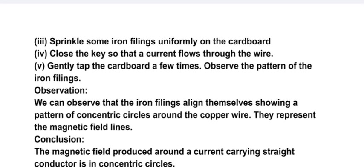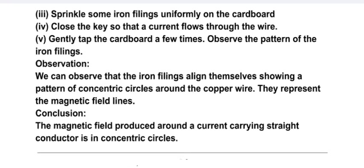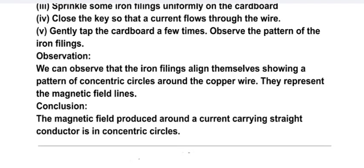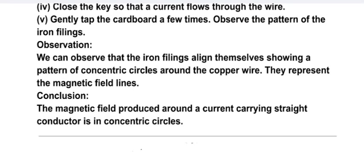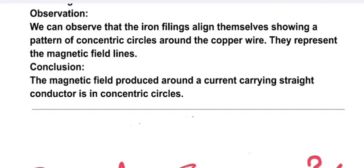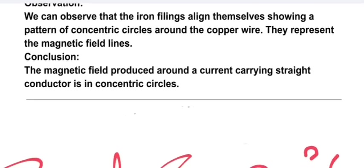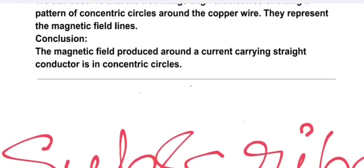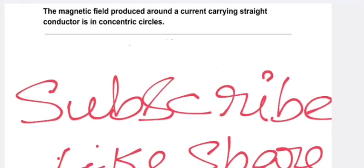Observation: we can observe that the iron filings align themselves showing a pattern of concentric circles around the copper wire. They represent the magnetic field lines. Conclusion: the magnetic field produced around a current carrying straight conductor is in concentric circles. So this is the complete model question paper prepared for practice purpose.